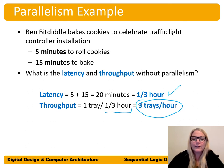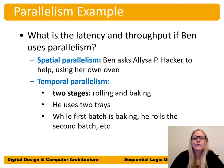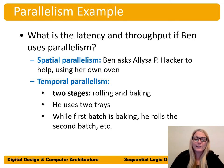So the latency is 20 minutes if you're waiting for those cookies, and the throughput is three trays per hour. Now let's employ parallelism. With spatial parallelism, Ben is going to ask Alyssa P. Hacker to help using her own oven. With temporal parallelism, Ben still completes the tasks himself but breaks it into two stages — rolling and baking — and uses two trays, so while the first batch is baking, he can roll the second batch.